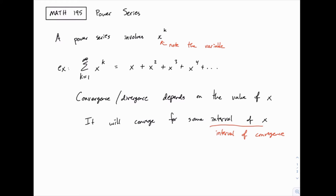For a specific example, we might find that the interval of convergence is from 2 to 5, meaning x values between 2 and 5 make it converge, and all other x values make it diverge. You may also see the term radius of convergence, which we'll discuss later. It turns out to be related to where this interval is centered and how far the interval spreads out from there.